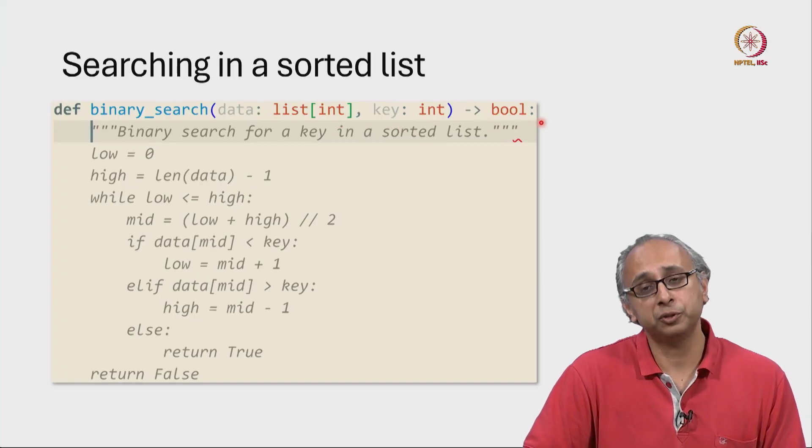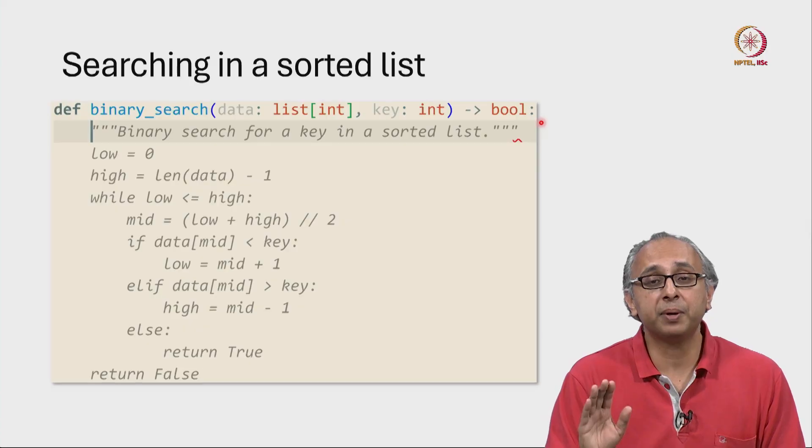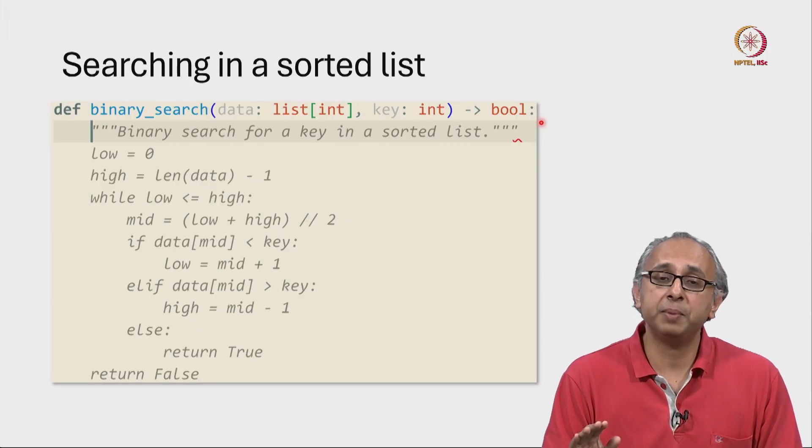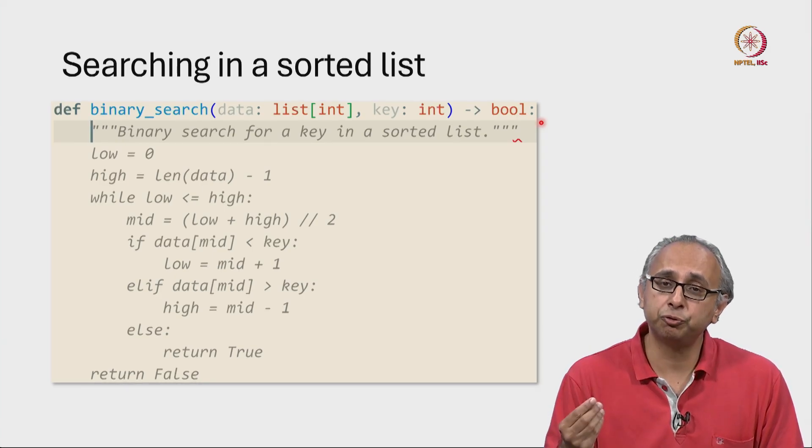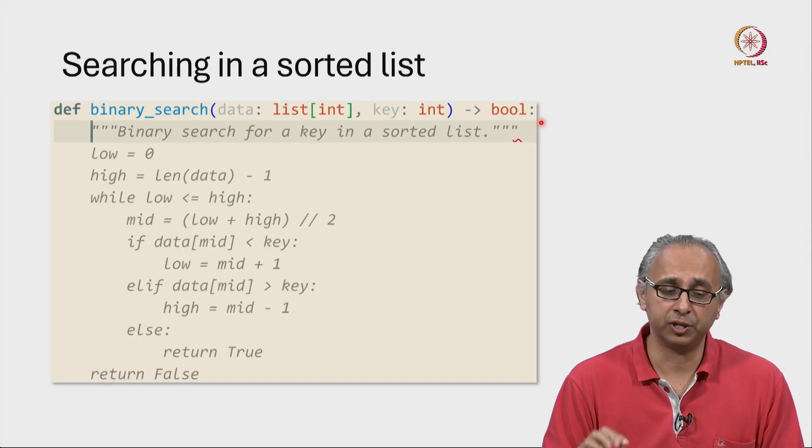This function is going to return either true if it's found this key or false. Now remember, the list may contain many copies of this key or it may contain no copies of this key. We want our function to return true if it contains at least one copy of this key and false otherwise.